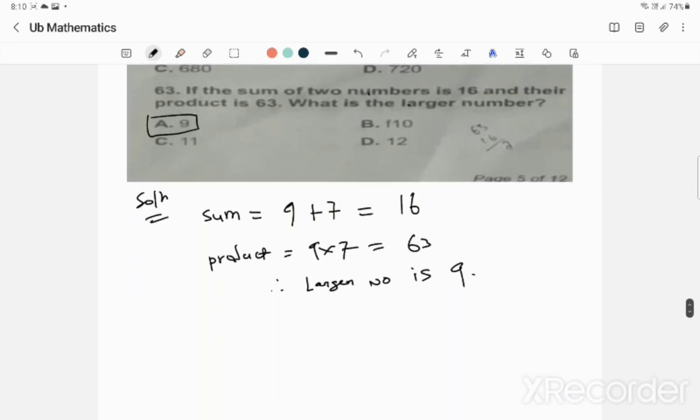Question 63: If the sum of two numbers is 16 and their product is 63, what is the larger number? This is simple if you know times tables. We know 9 times 7 equals 63, so the product of 9 and 7 is 63. The sum of 9 plus 7 is also 16. The larger number is 9, so 9 is the correct answer.